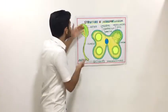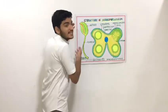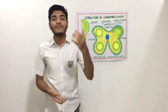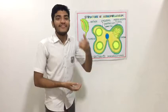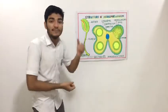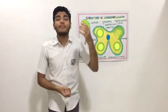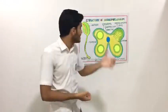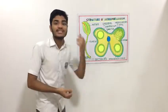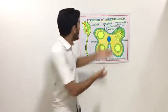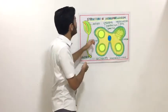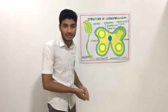Let's consider the figure. The stamen is the male reproductive part of all flowering plants — the angiosperm — which produces male gametophyte pollen grains. The long slender part of the stamen is known as the filament, and the large proximal end of the filament is known as the anther.